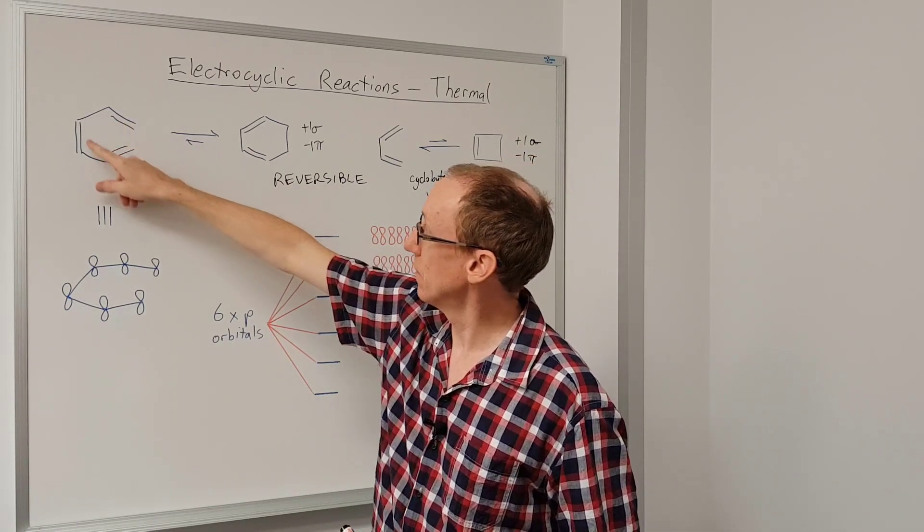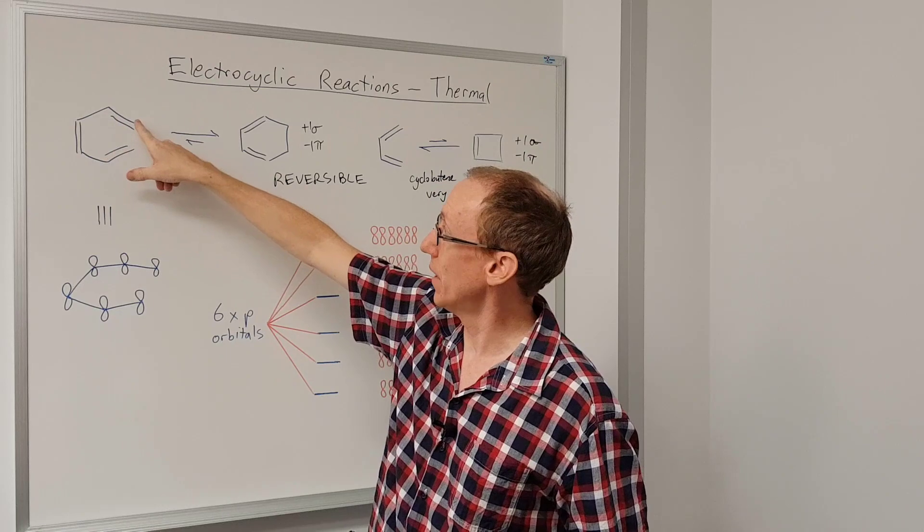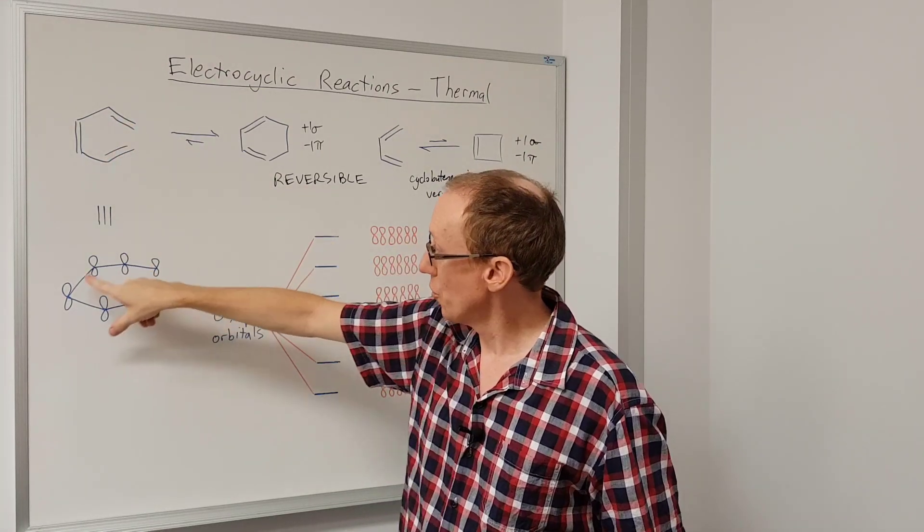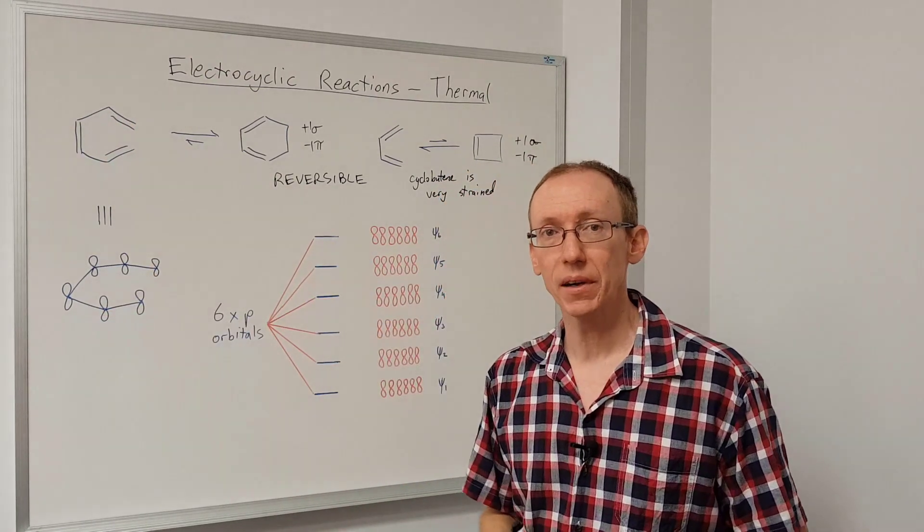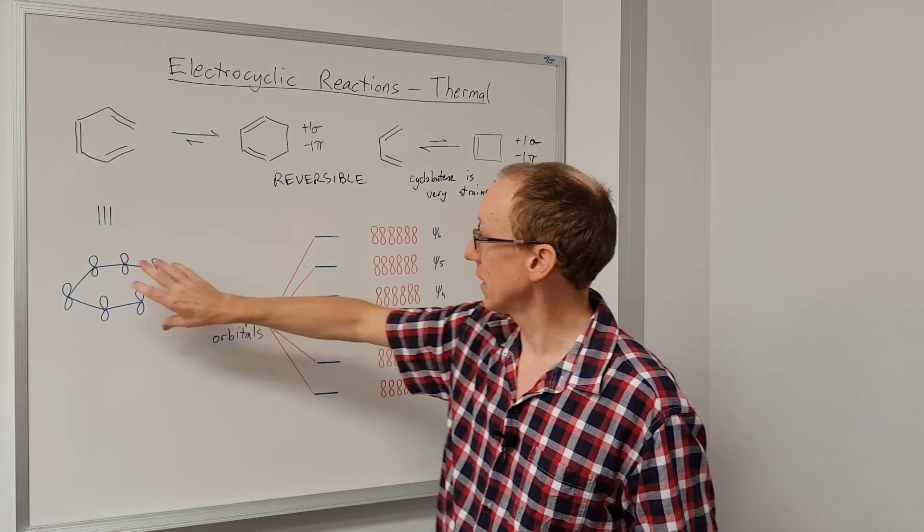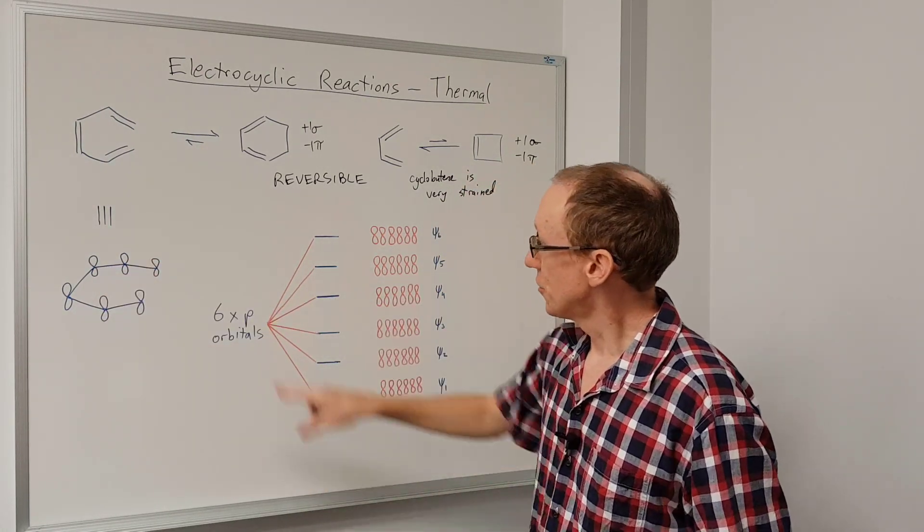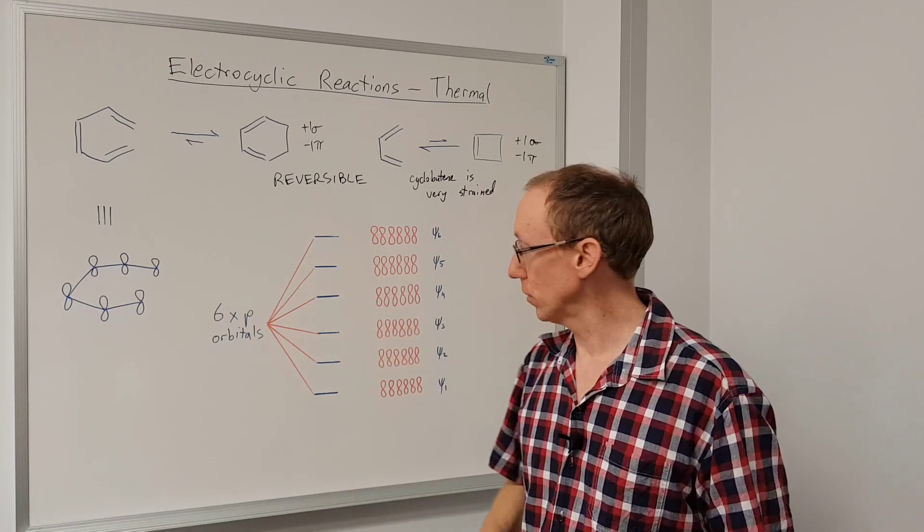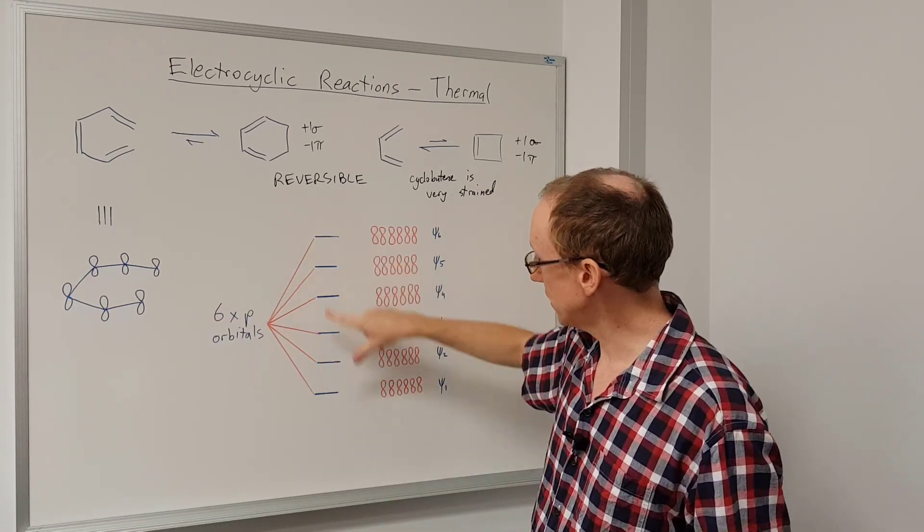If we draw out, for example, this hexatriene showing the p orbitals that are overlapping to make the pi system, then we'll get this depiction here. So that's overlap of six p orbitals. I've drawn that out here, six p orbitals.